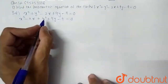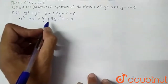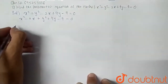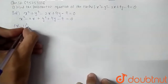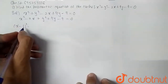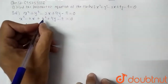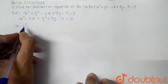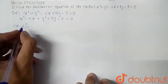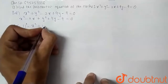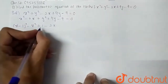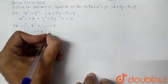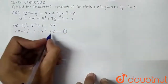We need to transform this into complete square form. Using the identity (a - b)² = a² + b² - 2ab, we get (x - 1)² = x² + 1 - 2x, so (x - 1)² - 1 = x² - 2x. Let this be equation number 1.